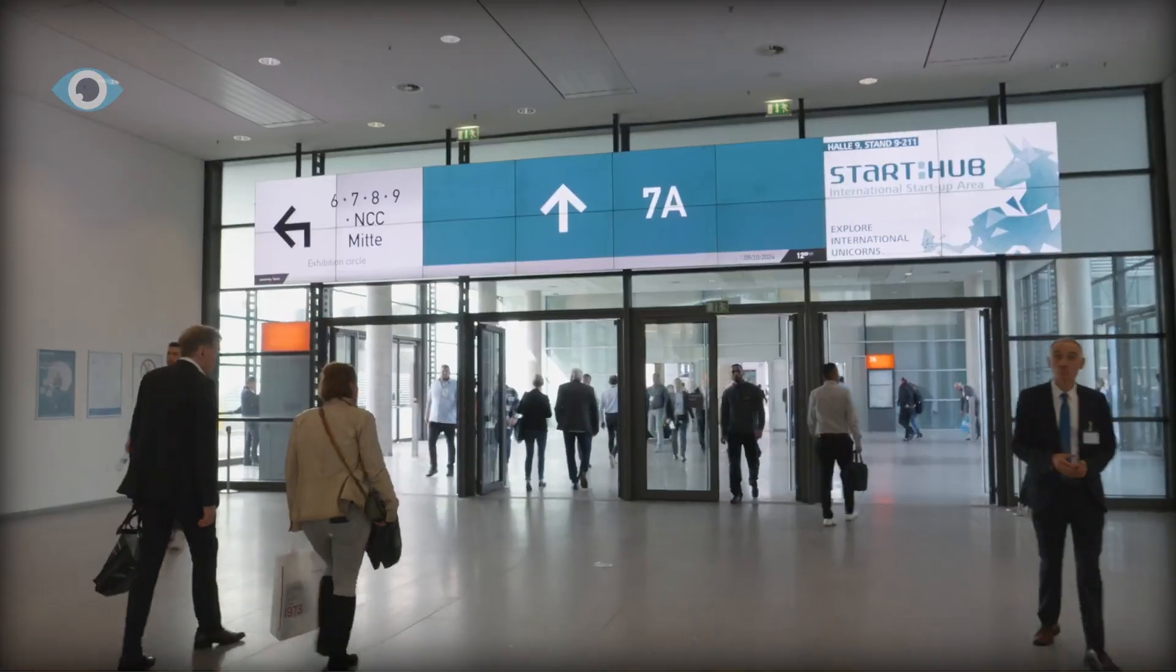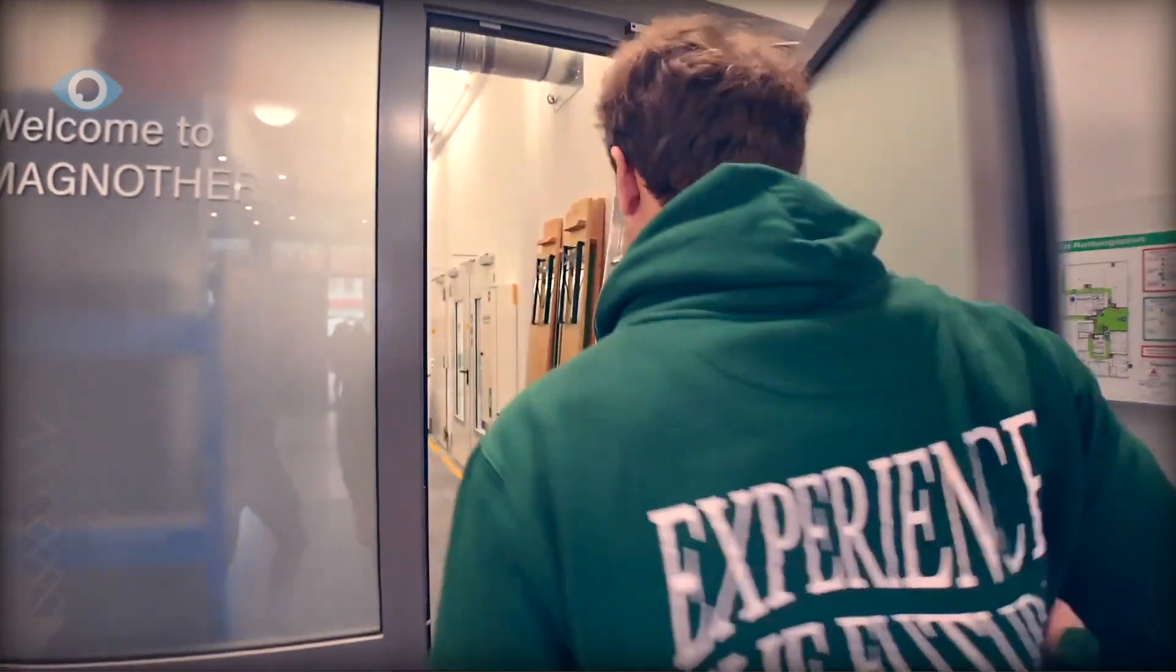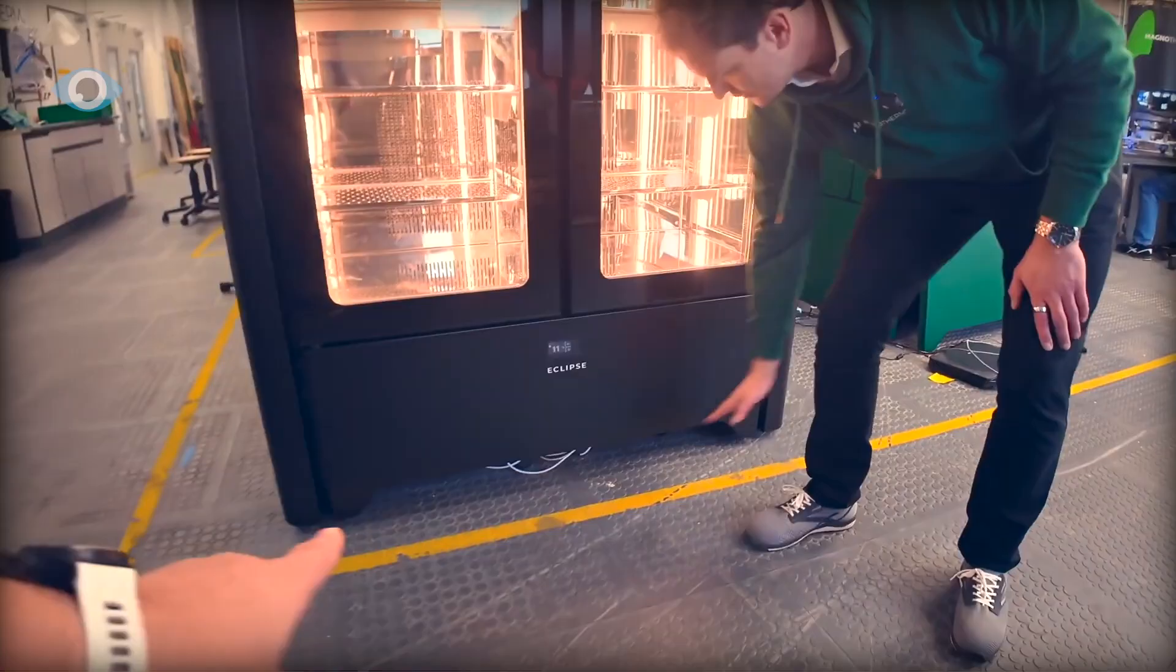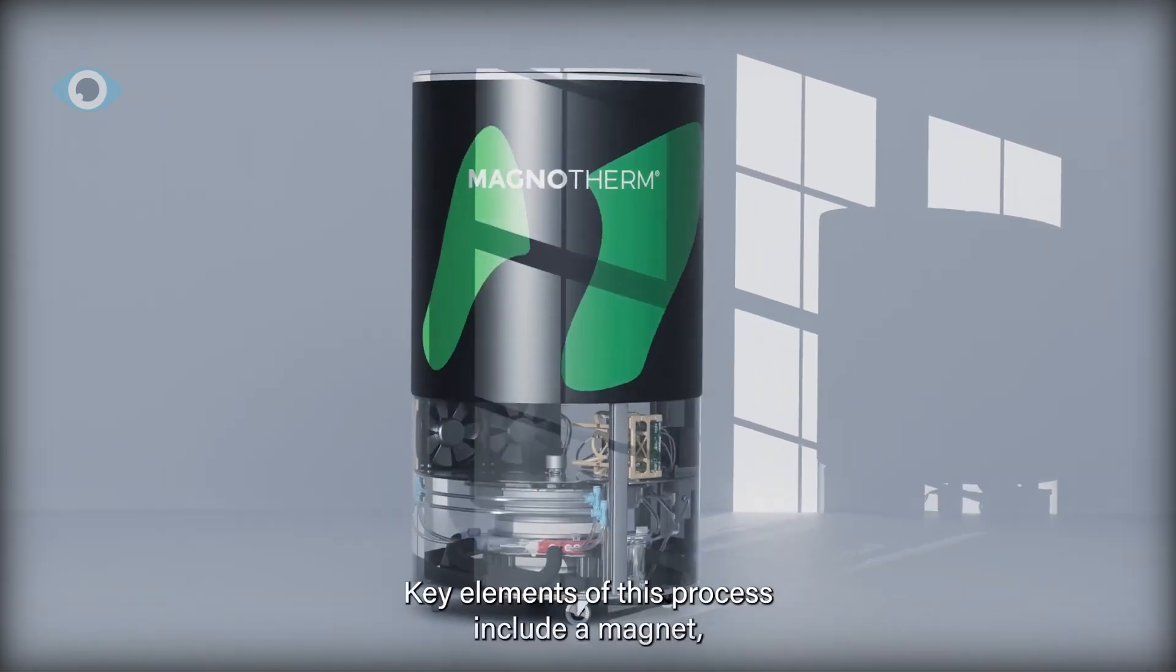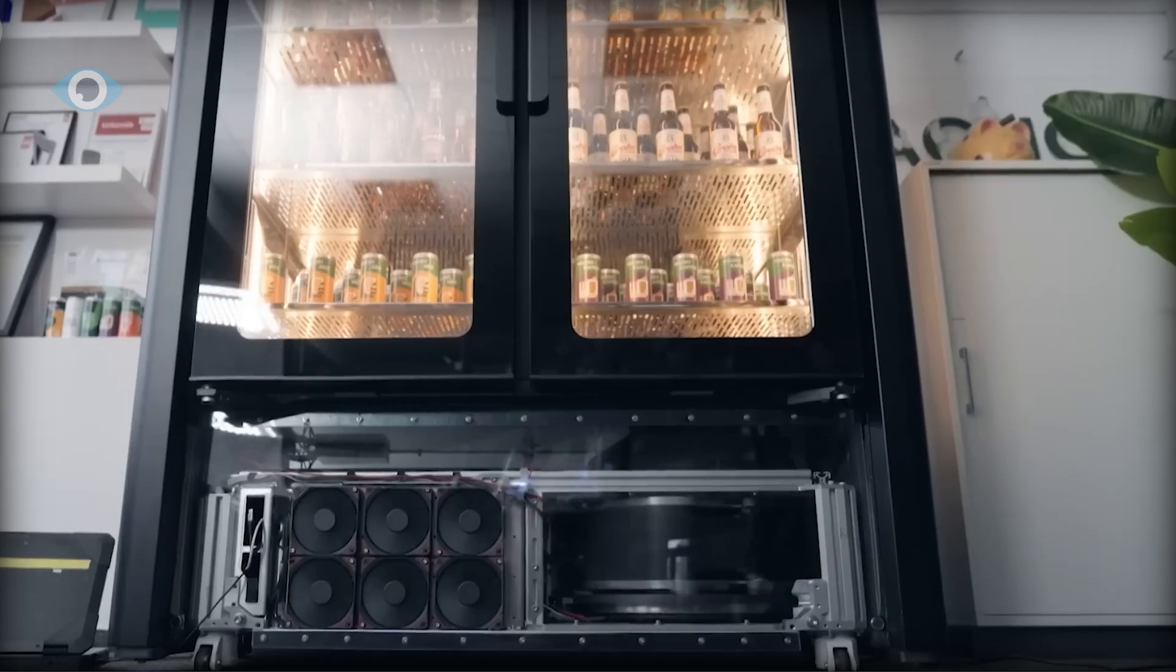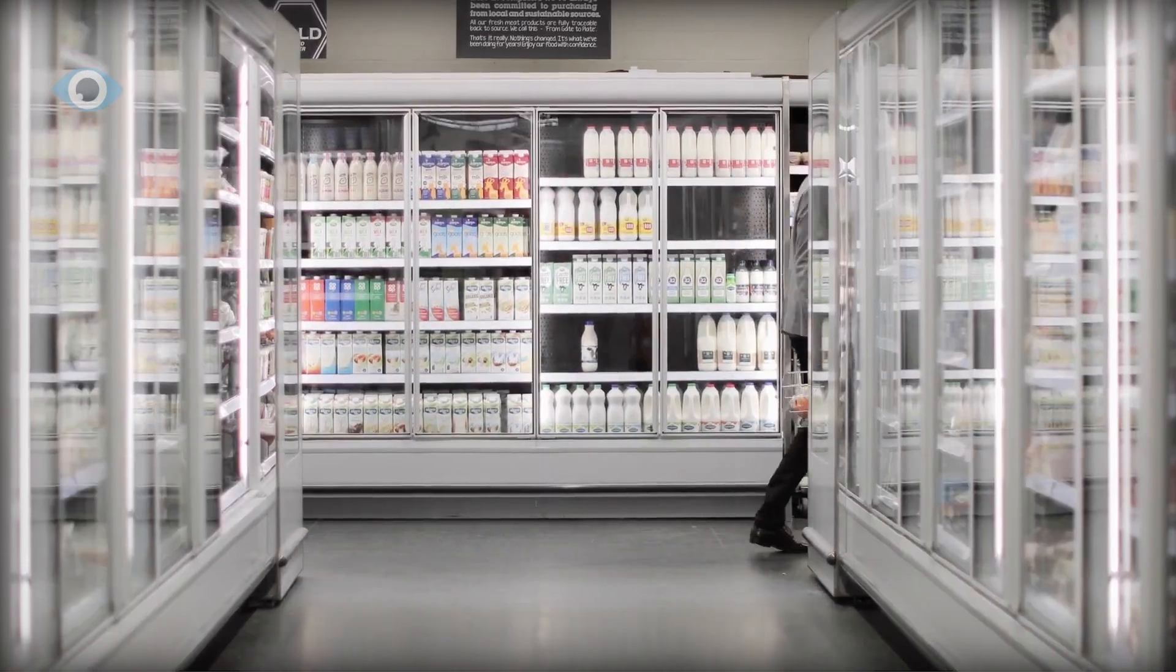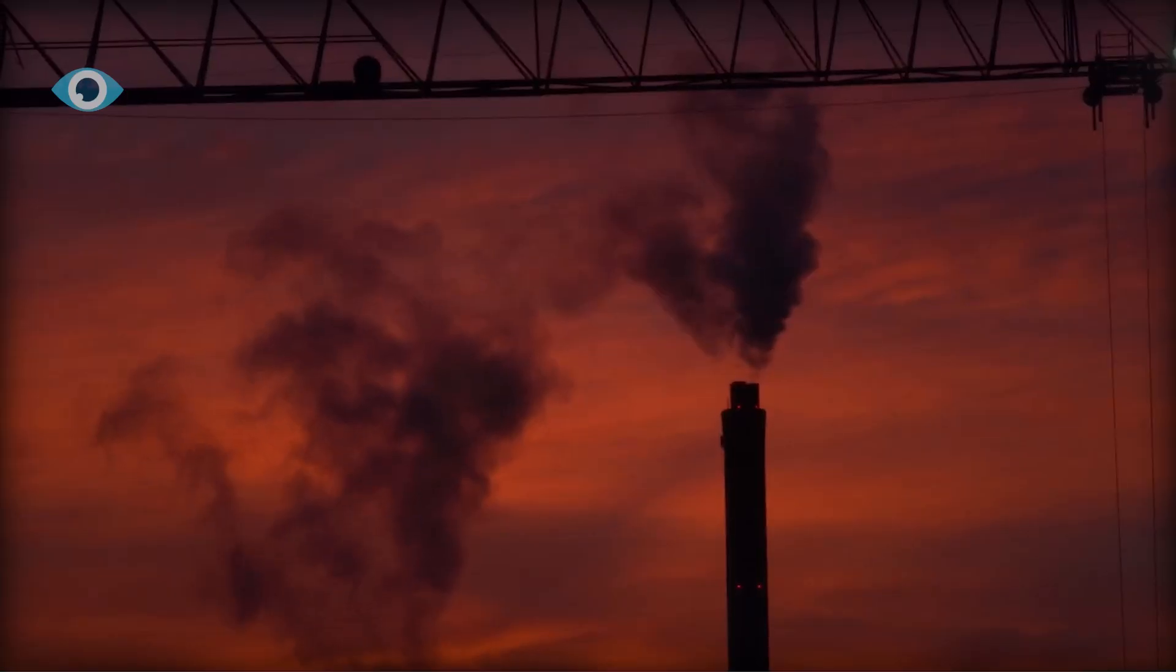for supermarkets, data centers, and commercial buildings. Nearby, Magnotherm, based in Germany, is already selling a €6,500 magnetocaloric chiller and working on more compact systems. Their Eclipse model targets retail and healthcare sectors, focusing on ultra-quiet, chemically clean cooling. Right now, most commercial efforts focus on industrial-scale refrigeration, where energy efficiency, reliability, and environmental regulations matter most.